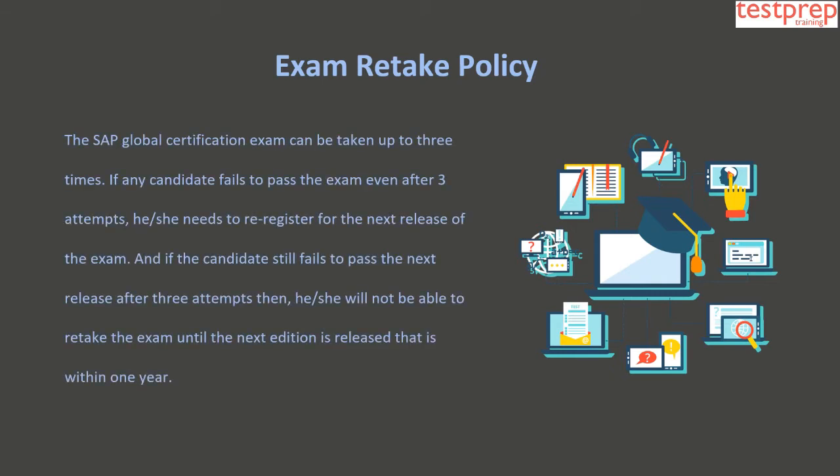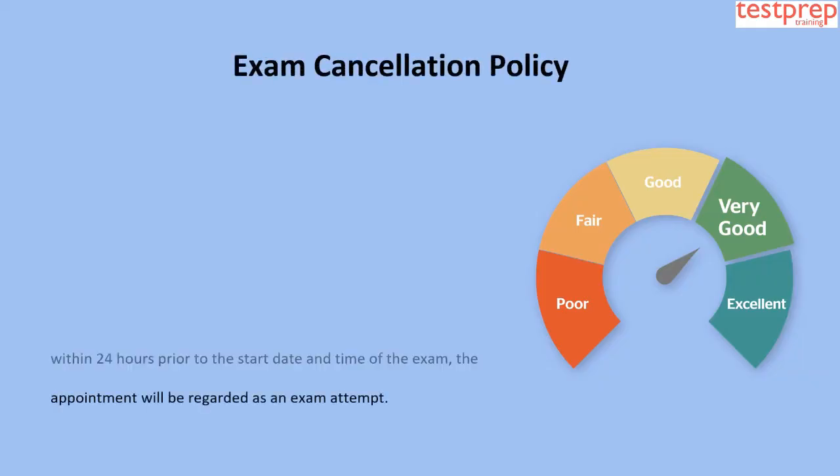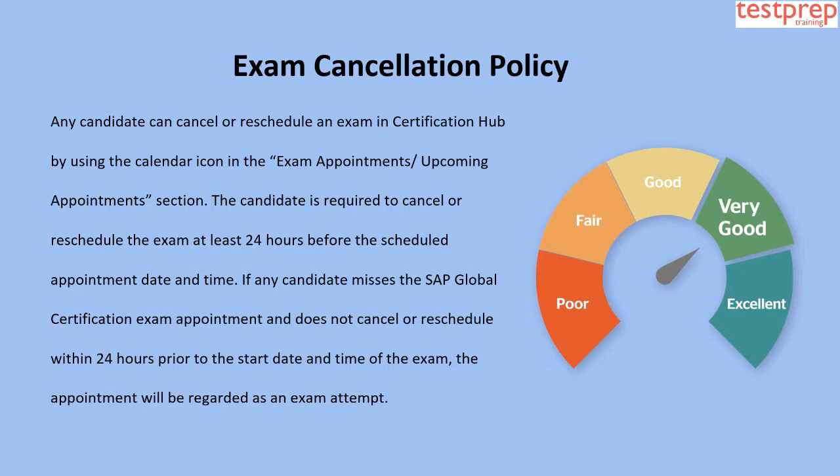The SAP global certification exam can be taken up to three times. If a candidate fails to pass even after three attempts, they need to re-register for the next release of the exam. If they still fail after three attempts on the next release, they will not be able to retake the exam until the next edition is released, which is within one year.